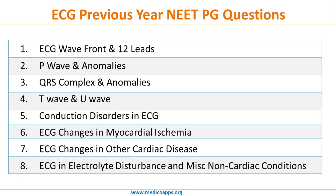The eight different kinds are: the first is on ECG wavefronts and the 12 leads placement. There are questions about axis deviation, questions about P wave and QRS wave. Then we have questions specifically focused on P wave changes or QRS complex changes. We also had a few questions on T wave and U wave.